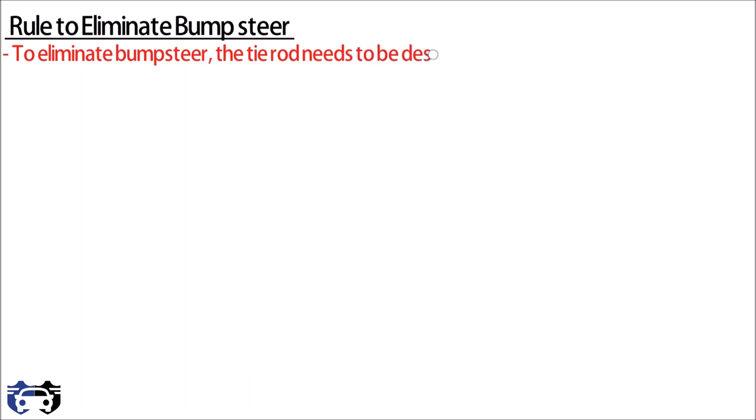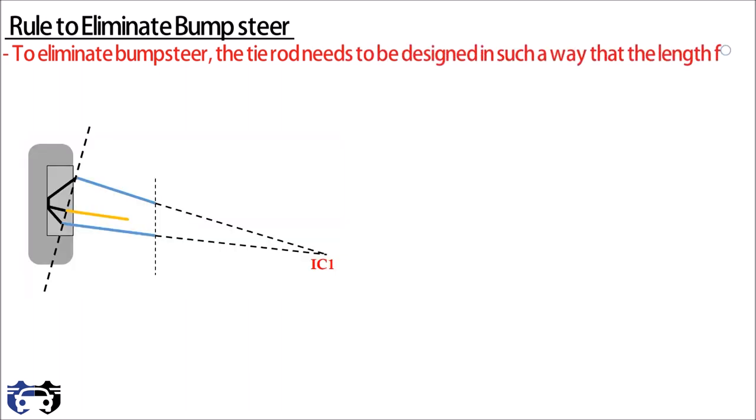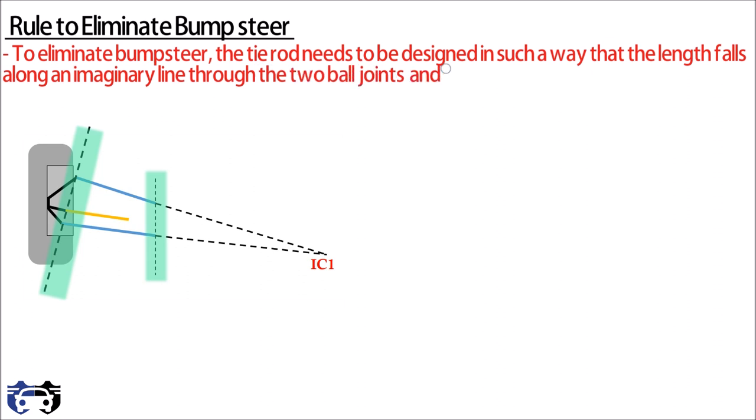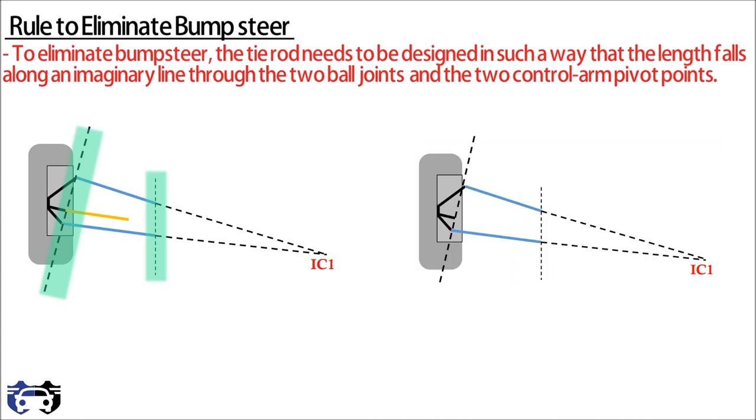Now let's understand the rule to correct bump steer. To eliminate bump steer, tie rod needs to be designed in such a way that the length of tie rod falls along an imaginary line through the two ball joints and two control arm pivot points, which means the length of tie rod should fall between these two lines.